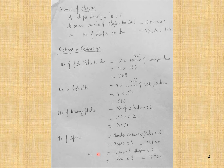The number of spikes equals number of sleepers multiplied by 8, which is 1540 × 8 = 12320.